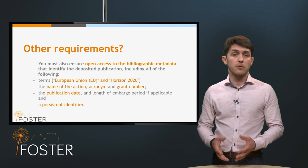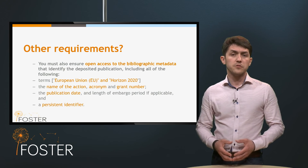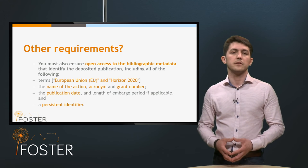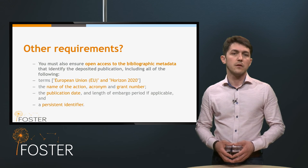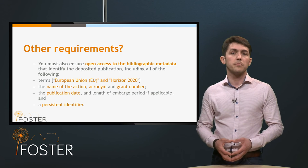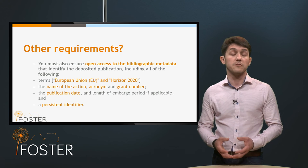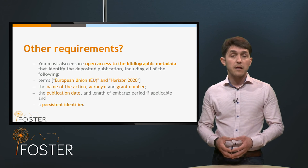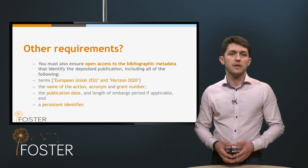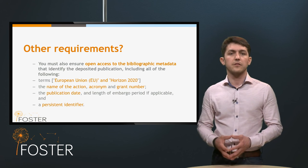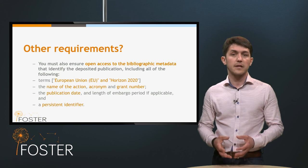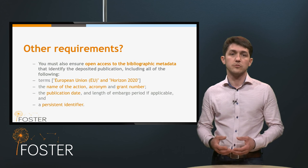Are there any other requirements? Beneficiaries must also ensure open access to the bibliographic metadata that identify the deposited publication. This metadata must include all of the following: a reference to the European Union and Horizon 2020 funding, the name of the action, acronym and grant number of your project, the publication date and length of embargo periods if applicable, and last but not least, a persistent identifier, also referred to as a DOI.